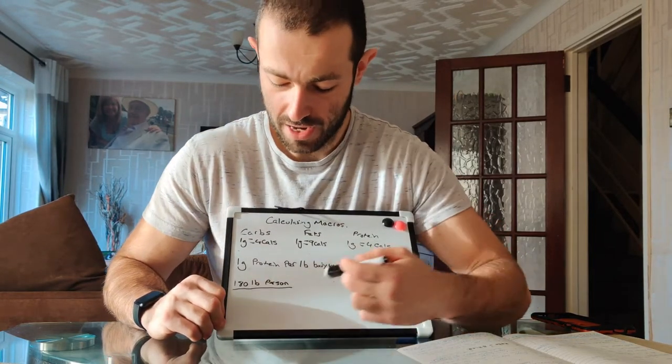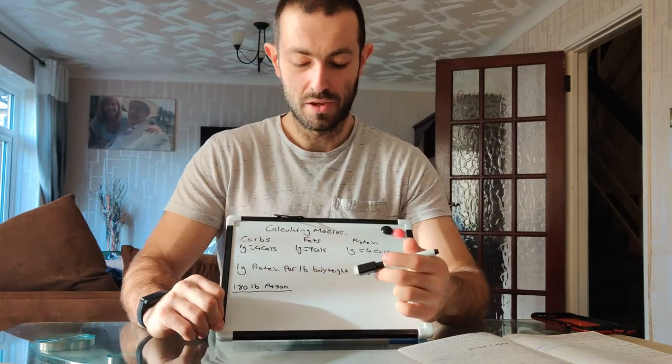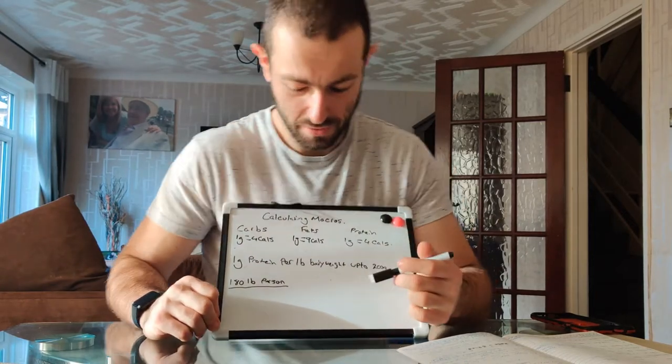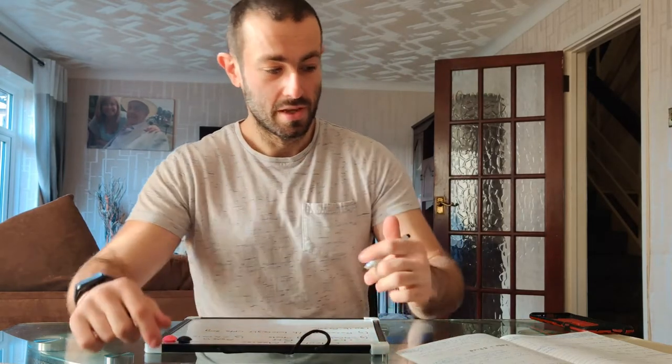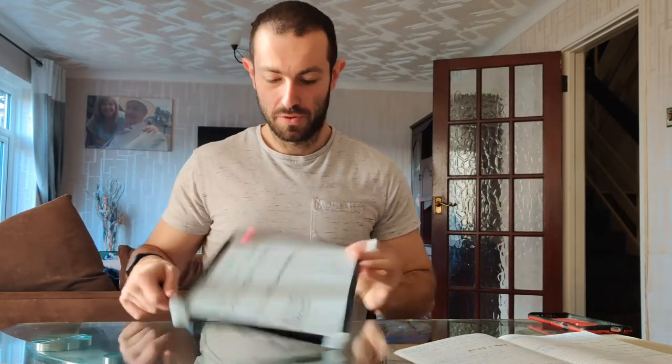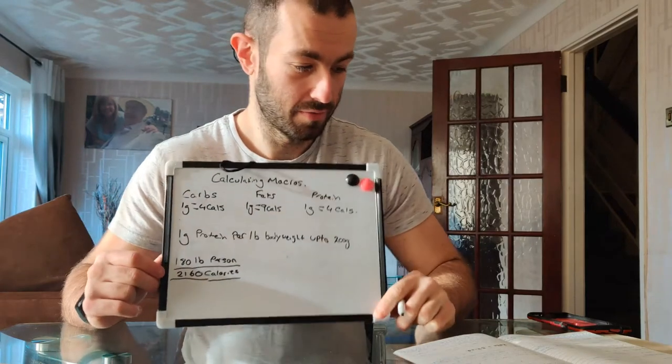Say you are a 180 pound person. We are going to work out your calories — they are going to be 2160. This is for losing weight. For a 180 pound person, they are going to have 2160 calories to play with.